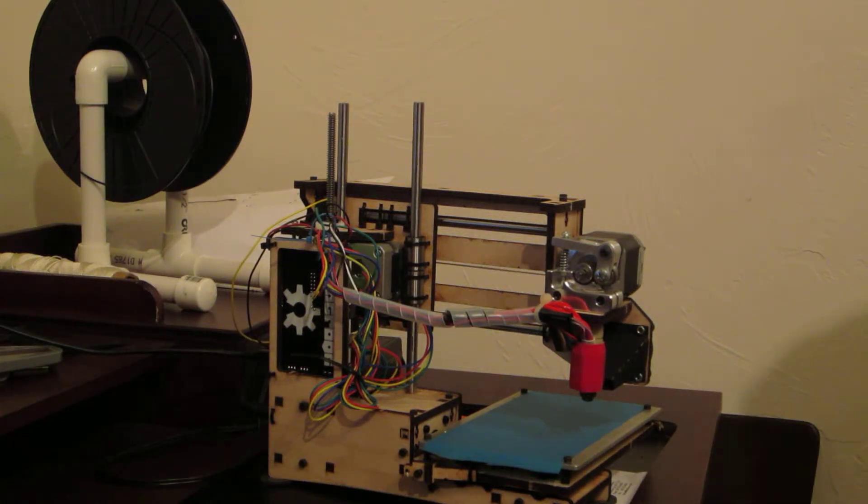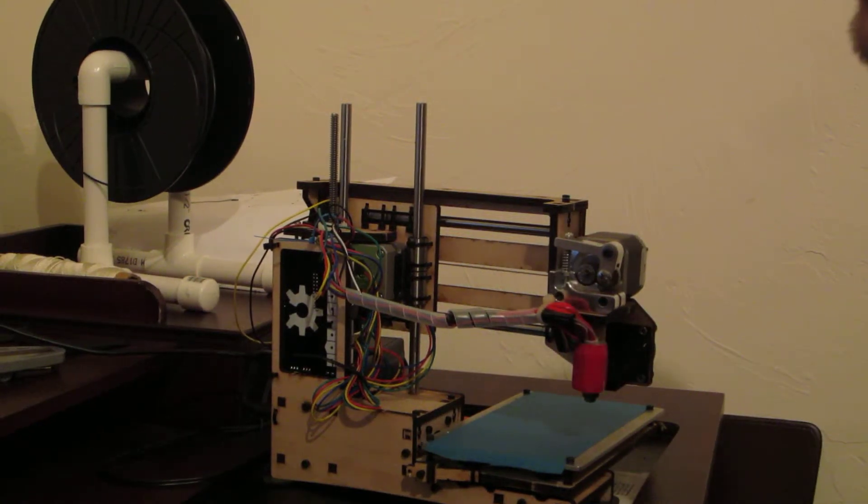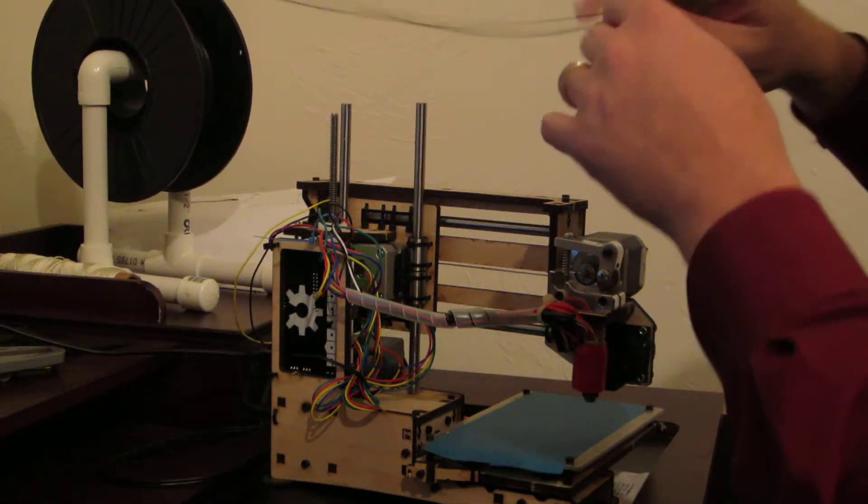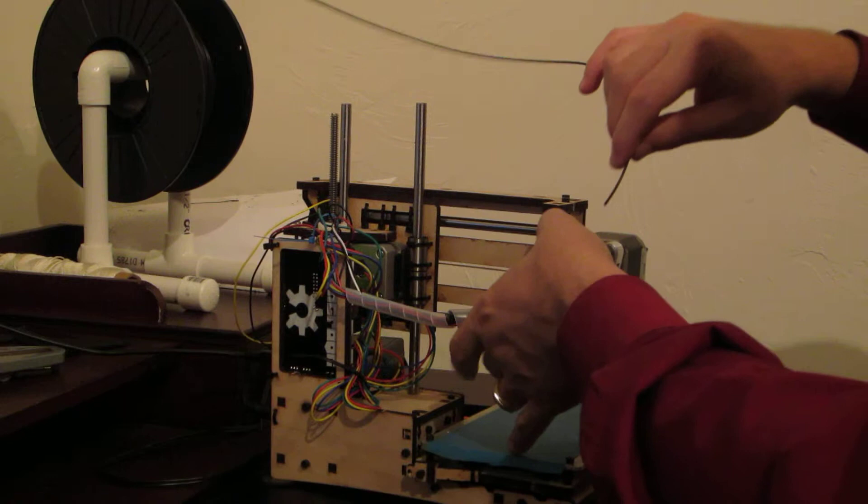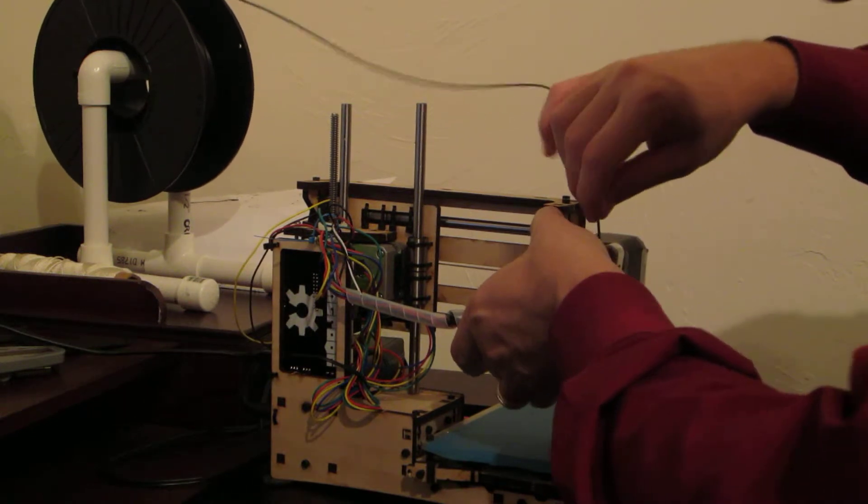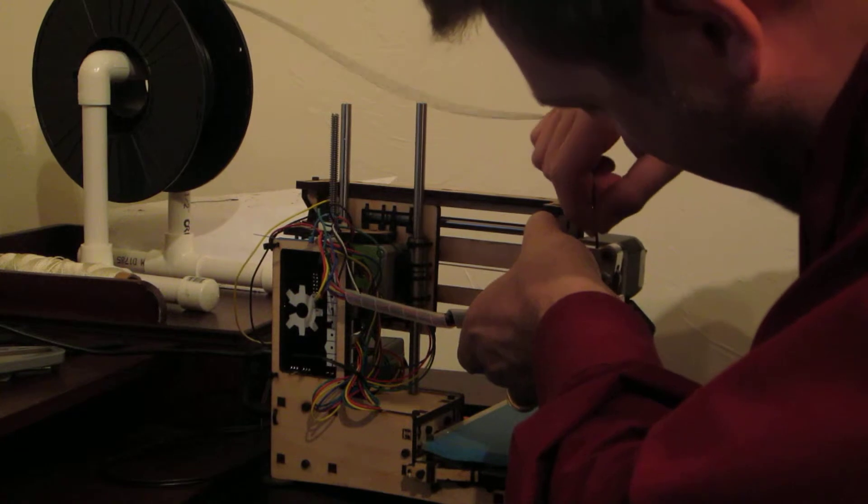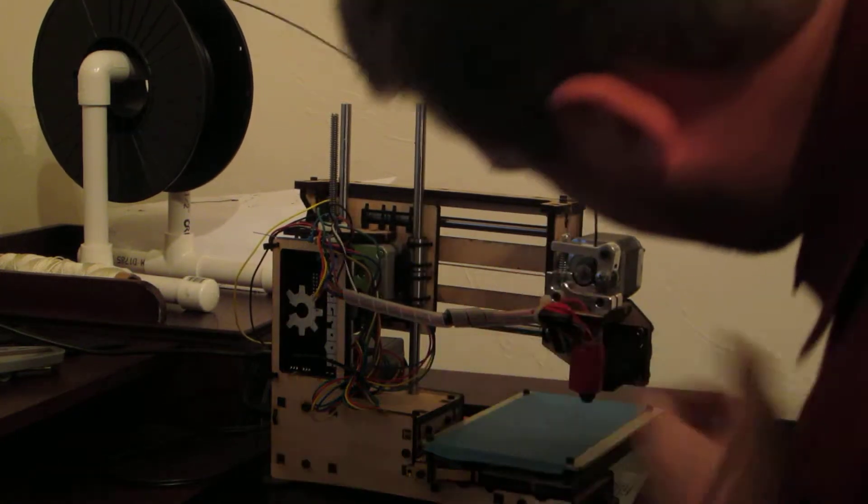Alright, it's time for a test drive. We've got the extruder up to 200 degrees Celsius. I've cut the filament to a fresh tip. Now this is adjusted, so it springs pretty good. I've just got to be able to see—it's a little bit dark in here. There we go.